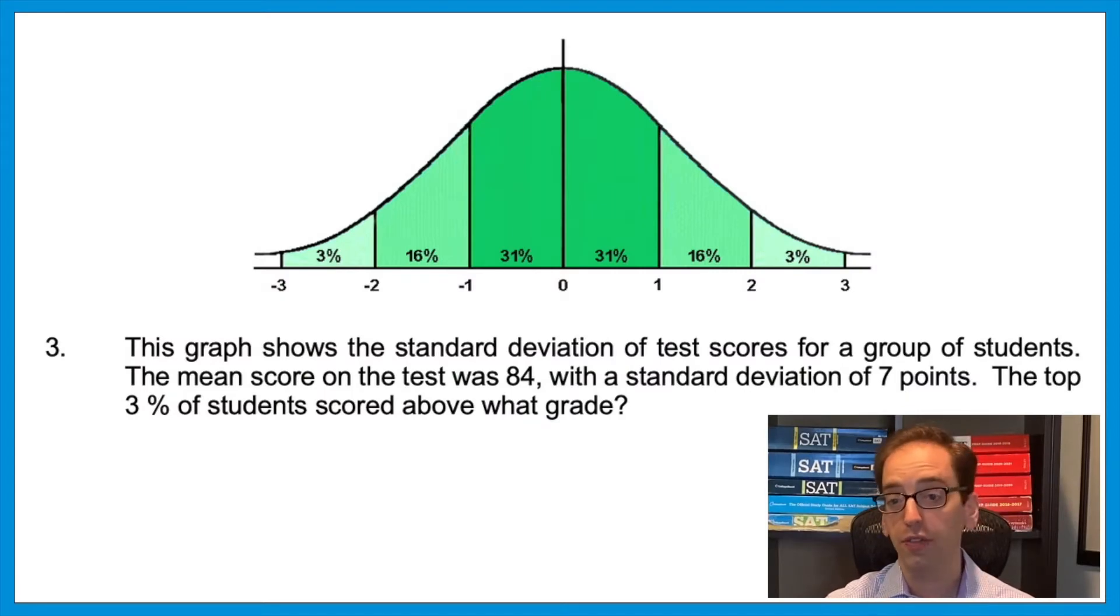Here's how. Question three: This graph shows the standard deviation of test scores for a group of students. The mean score on the test was an 84 with a standard deviation of seven points. The top 3% of students scored above what grade? So let's talk about how to read a standard deviation graph. The line in the middle where it says zero at the bottom represents the mean. So that vertical line represents the students who scored an 84. Now each time you move to one of the other vertical lines, it means you move by one standard deviation. And that deviation is seven points. In other words, each time you move between the vertical lines, it indicates a jump of seven points. So starting at that middle line, which indicates 84, if we moved one line to the left where it says negative one, that means we move down one deviation or minus seven points. So we moved from 84 to 77.